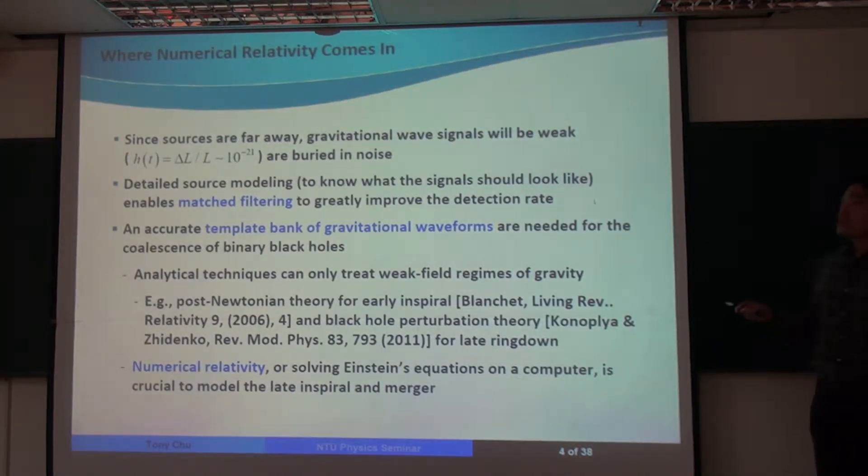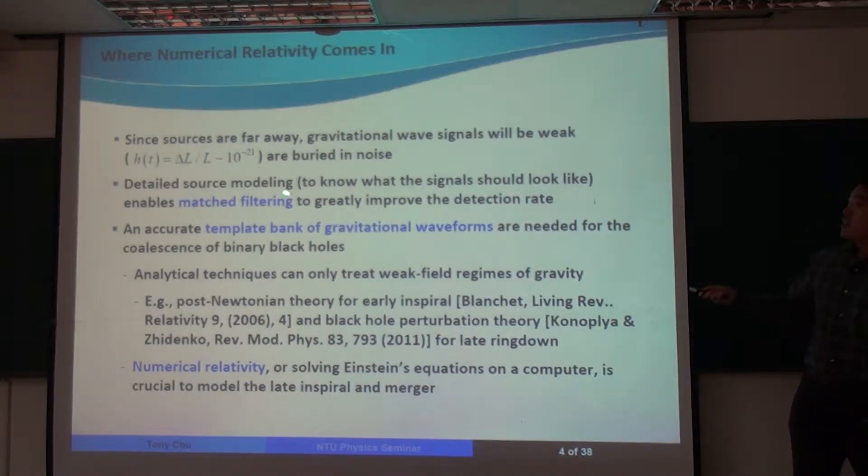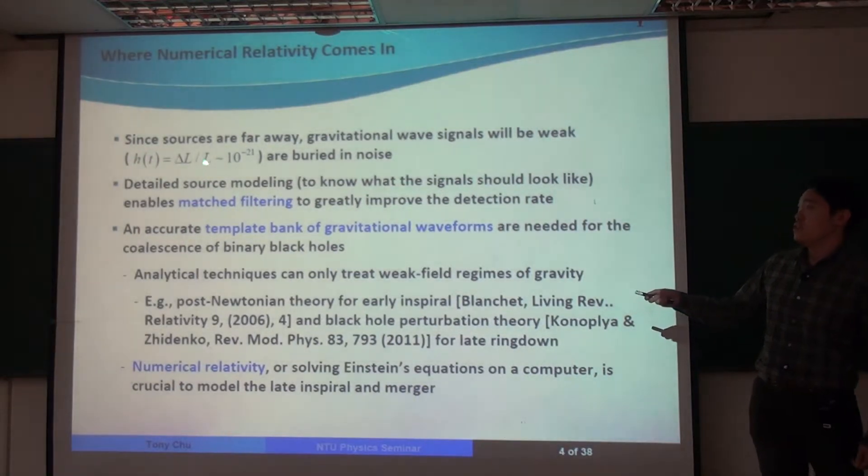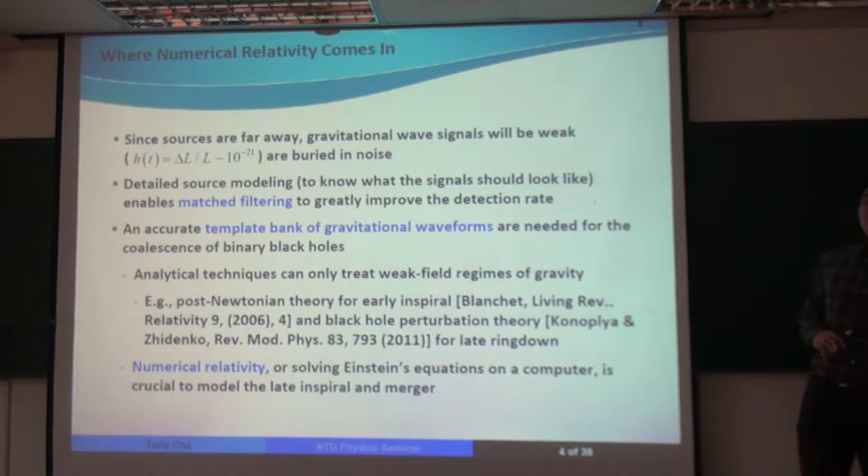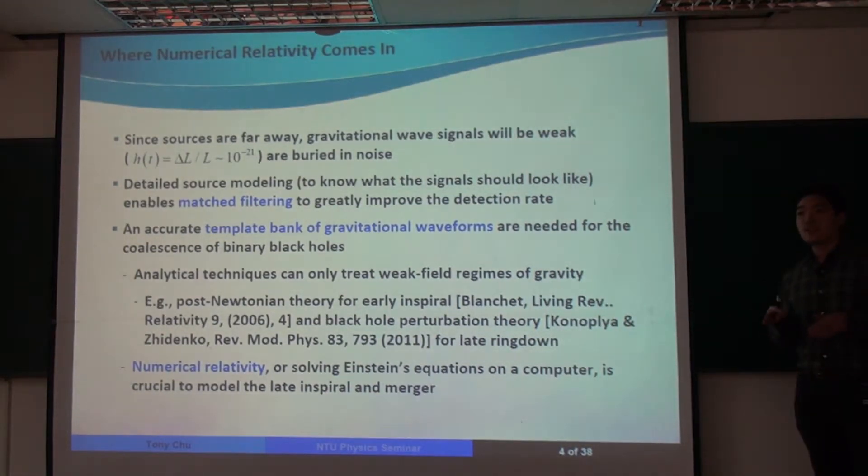So there's a catch though, because these astrophysical sources are very far away from us. By the time the gravitational wave signals reach us, the amplitude of them is already very low. So the typical size of H of T is around 10 to the minus 21. So these signals are deeply buried in noise.